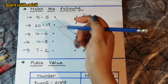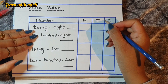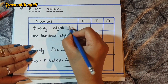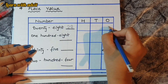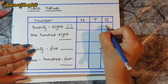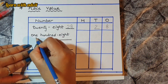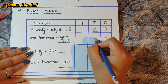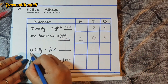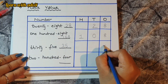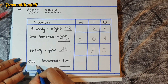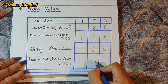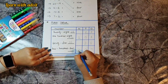Here I have given the sheet for place value. There are numbers and a place value word problem. For 28: write the numeral first, then ones place is 8 and tens place is 2. For 108: ones place is 8, tens place is 0, hundreds place is 1. For 35: ones place is 5, tens place is 3. For 204: ones place is 4, tens place is 0, hundreds place is 2.